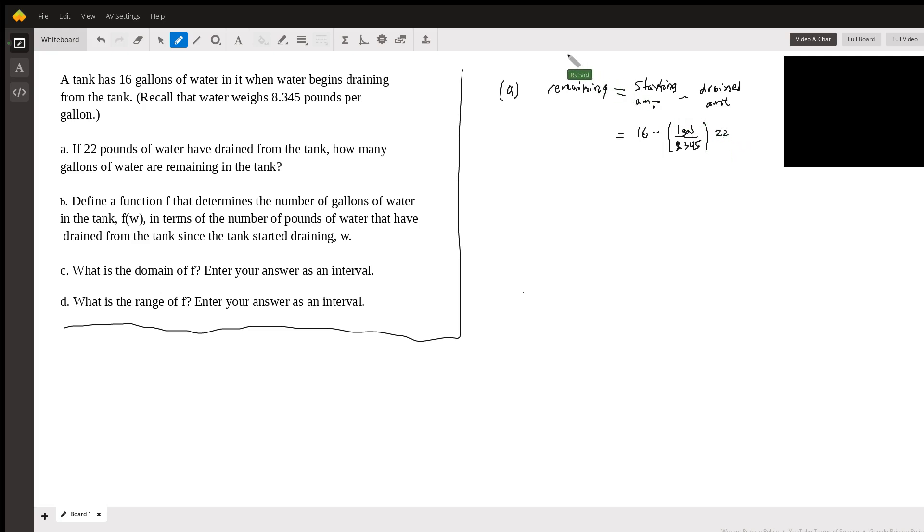You see the pounds, oops, I forgot to put that in there. This is pounds here. And we're going to multiply it by 22 pounds. So you can see the pounds cancel and you're left with gallons. So this is going to be 16 minus...